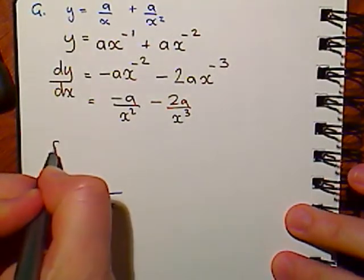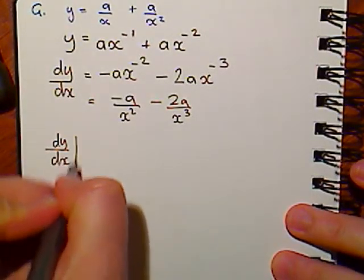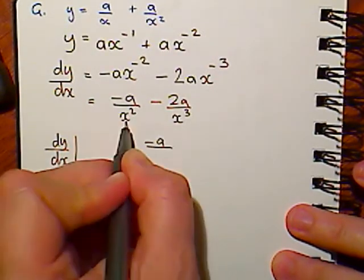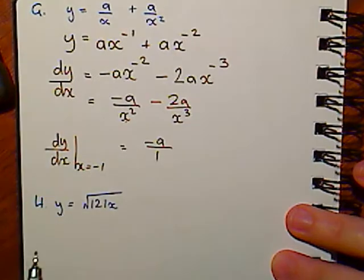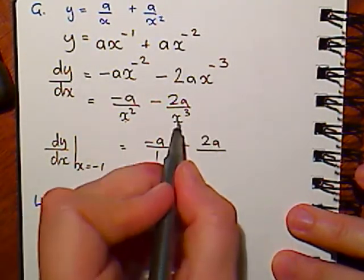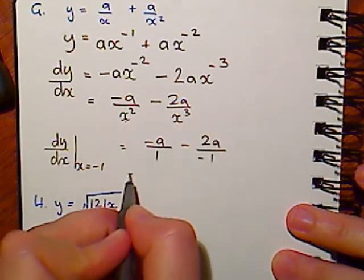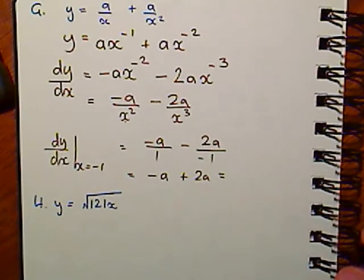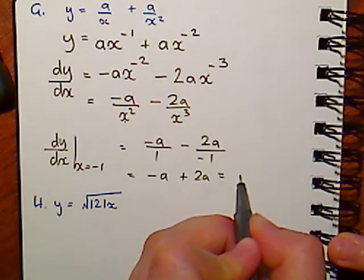What we need to do to finish this question is just find that at the place where x equals minus 1. So it's minus a over minus 1 squared is 1. Minus 2a over minus 1 cubed is minus 1. Which of course is minus a plus 2a, which is just a.